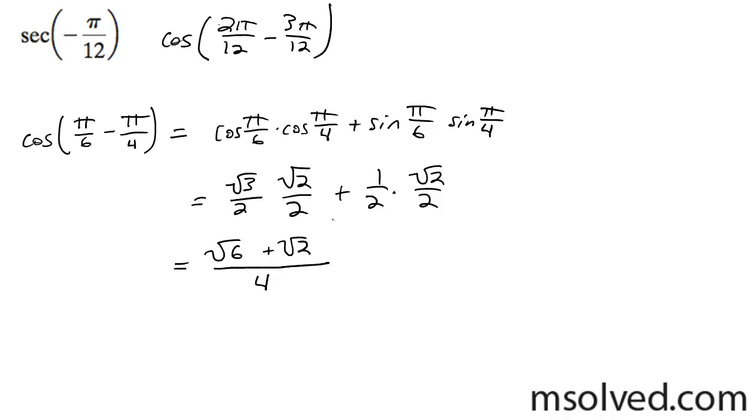Now, since it's the secant, we're going to reciprocate this. We're going to flip it now. So we're going to get 4 on the top, and root 6 plus √2 on the bottom.